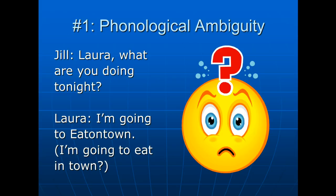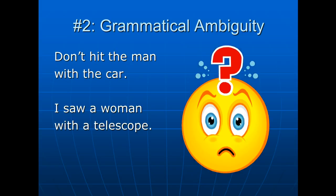The second type of ambiguity is grammatical. If I say 'don't hit the man with the car,' what am I saying? Am I saying there's a man with a car over there, don't go hit him? Or am I saying you're driving a car and there's a man over there, don't hit him? You can diagram the sentence two different ways with two different meanings. Similarly, 'I saw a woman with a telescope' — did you see a woman who had a telescope, or were you using a telescope to look at a woman? This is grammatical ambiguity; the answer emerges only when you diagram the sentence, but in actual use it leads to confusion.